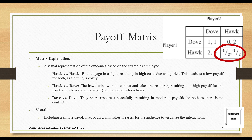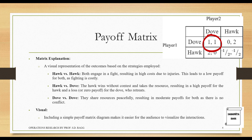When two hawks fight they will obviously get injured. Hawk versus Dove: the Hawk wins without contest and takes the resource, resulting in a high payoff for the Hawk and a loss or zero payoff for the Dove who retreats. Dove versus Dove: they share resources peacefully, resulting in moderate payoffs for both as there is no conflict — the resource is divided amongst the two of them.